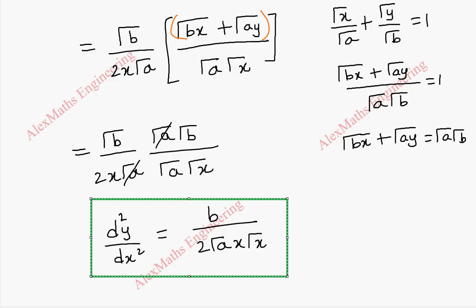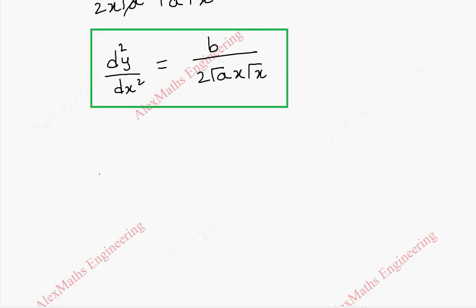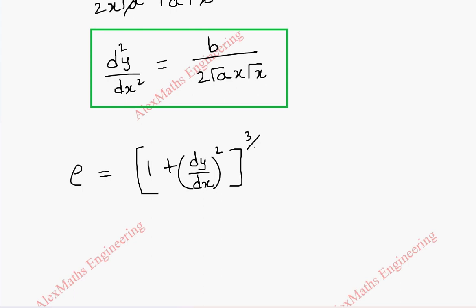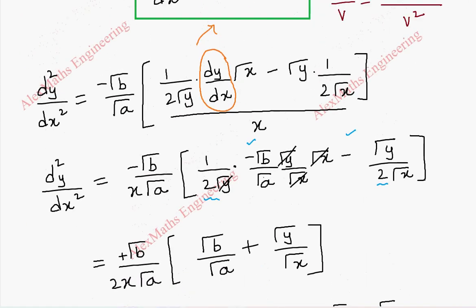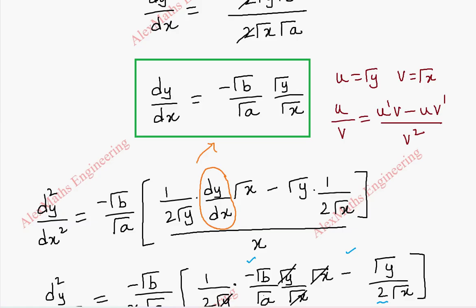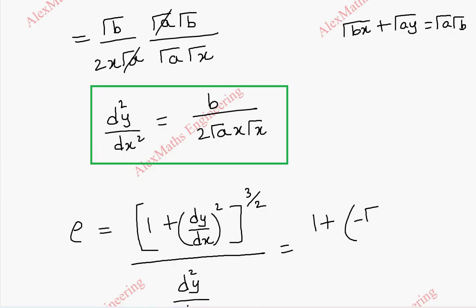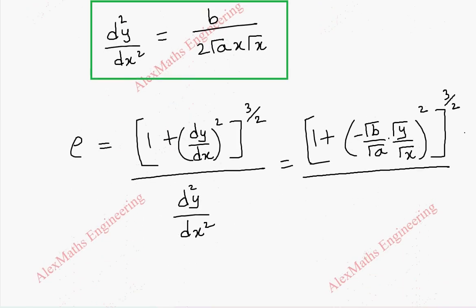Now we substitute both results into the radius of curvature formula. The radius of curvature rho is 1 plus dy by dx whole squared, then whole power 3 by 2, divided by d squared y by dx squared. So we substitute dy by dx as minus root b by root a into root y by root x — we will square it in the next step — giving 1 plus by by a into x in the numerator after squaring, whole power 3 by 2, divided by the second derivative b by 2 root a x root x, which can be written as 2 root a x root x in the denominator.